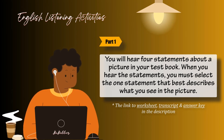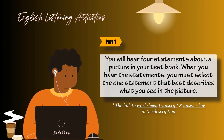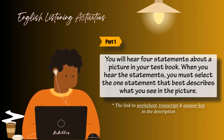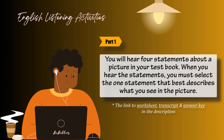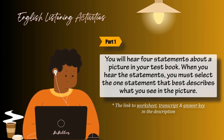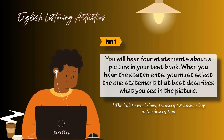Look at the example item below. Now listen to the four statements. A: They're leaving the room. B: They're turning on the machine. C: They're sitting at the table. D: They're reading the newspaper. Statement C, 'They're sitting at the table,' is the best description of the picture, so you should select answer C and mark it on your answer sheet. Now let us begin Part 1 with question number 1.